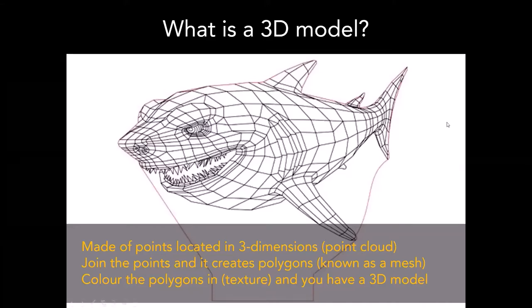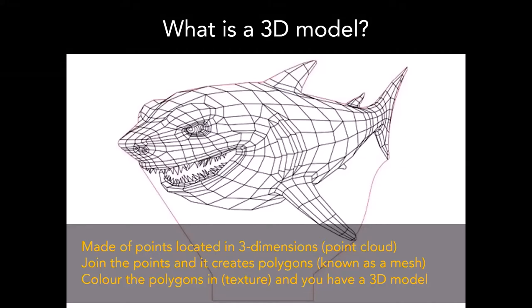A 3D model is actually made from polygons, so this shark is actually made from various squares, rectangles, and such. Where those polygons meet is called a vertex — a data point in 3D space. When you've got those polygons, which we call a mesh, you color them in with a texture and you have your 3D model. You've got points in 3D space — the point cloud — joined together to create polygons which form the mesh, and we color them in for the texture.